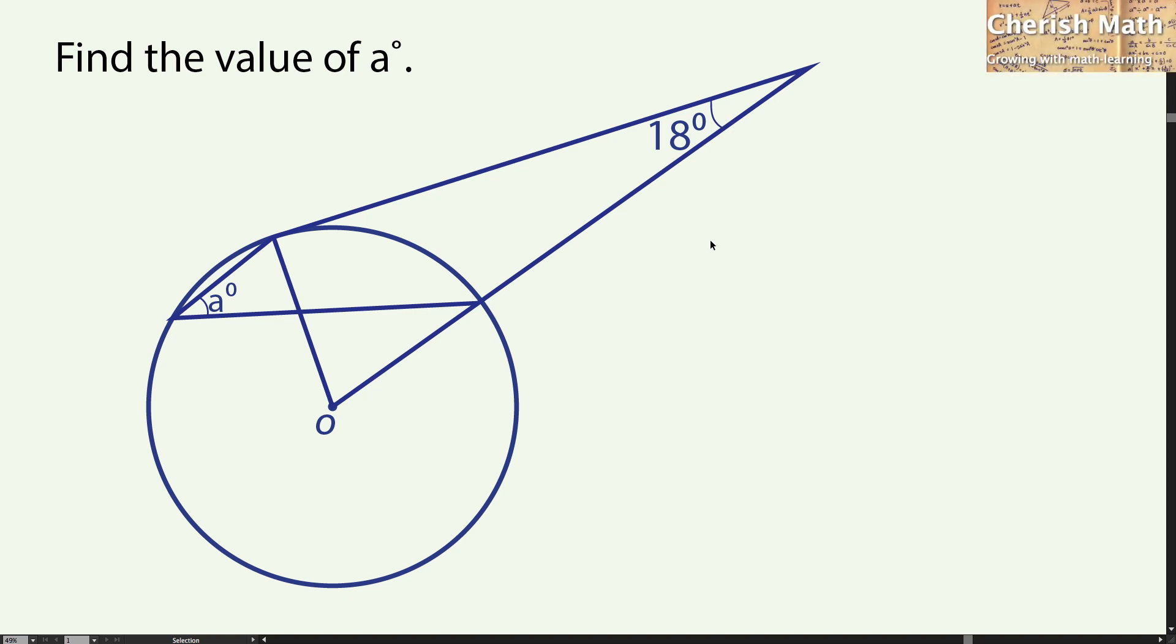Welcome to Cherish Math. This is the question: find the value of a degree. Given here is a circle and a triangle that lie across the circle, so we want to find what is the value of the a degree that is located over here.